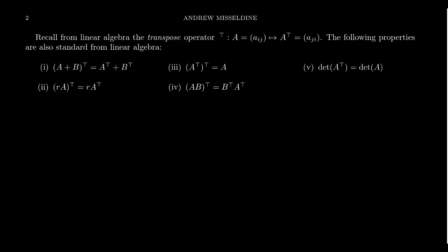You've probably seen something like this before. You can click the link on the screen right now to see some examples if you need a little bit of a refresher. Some properties of the transpose operator: if you take the sum of two matrices and take its transpose, this is equal to A transpose plus B transpose.